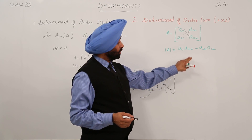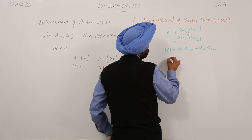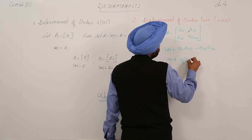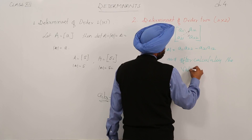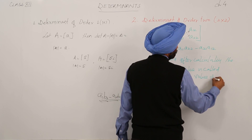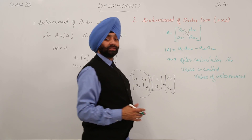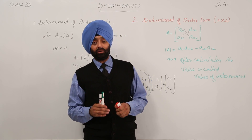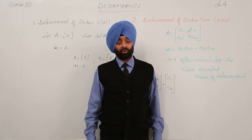Now what exactly is this called? This is called the determinant. After calculating, whatever value we get is called the value of the determinant. The value of the determinant is exactly what we call the determinant. So those were the two things for order 1×1 and order 2×2. Now after doing this part we are going on to some very nice examples for the determinants.